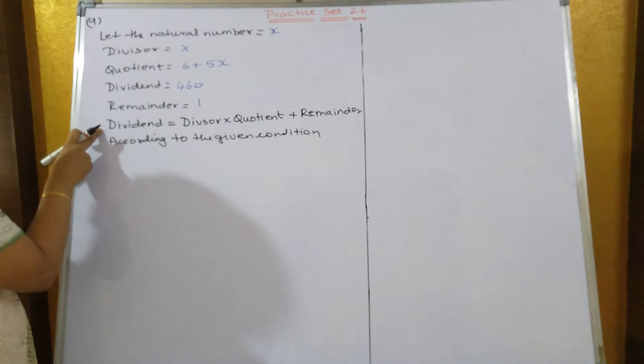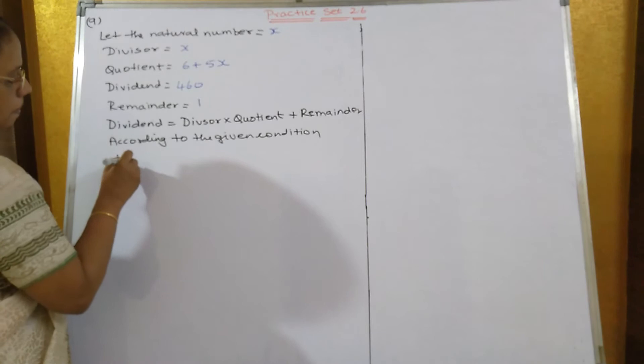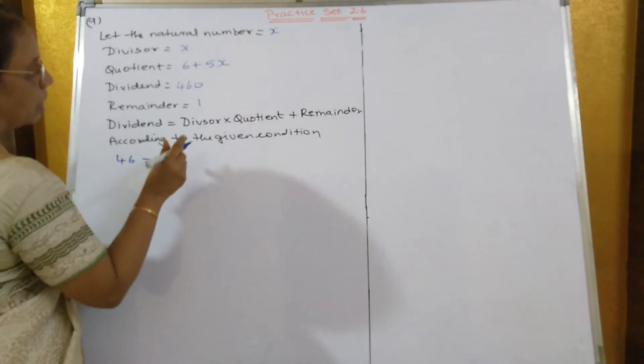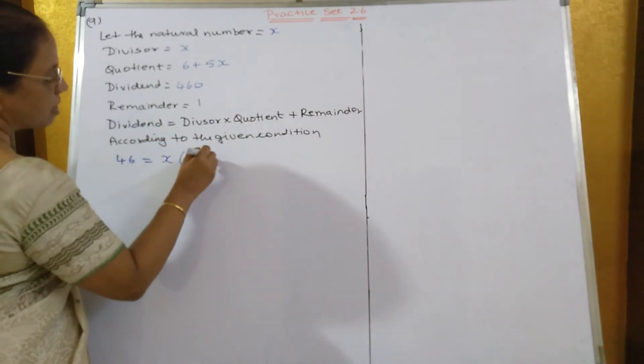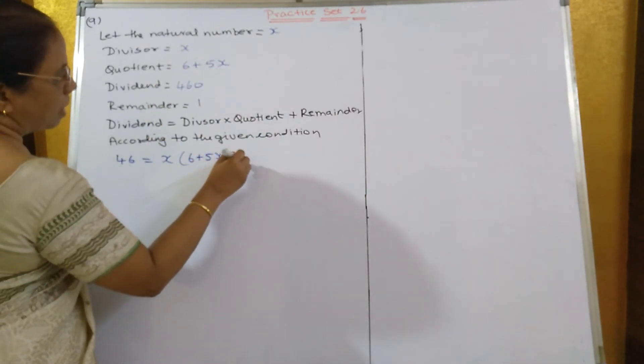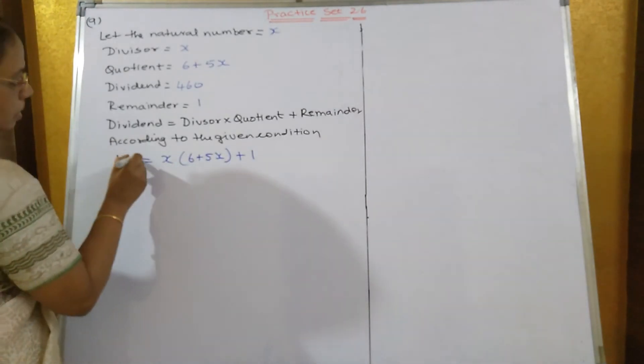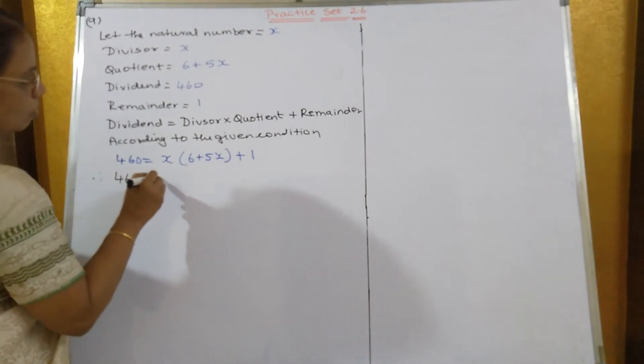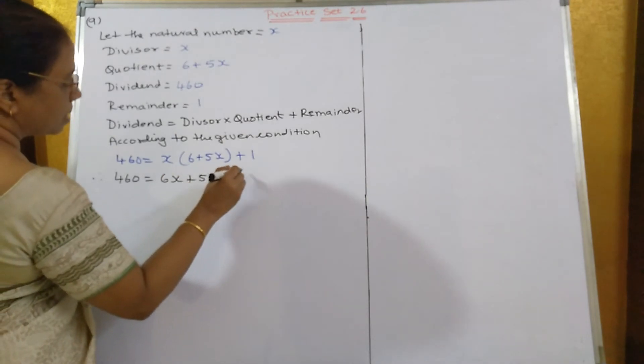Given condition is this, dividend that is 460 is equal to divisor x into quotient, which is 6 plus 5x, plus remainder that is 1. Therefore, 460 is equal to 6x plus 5x square plus 1.